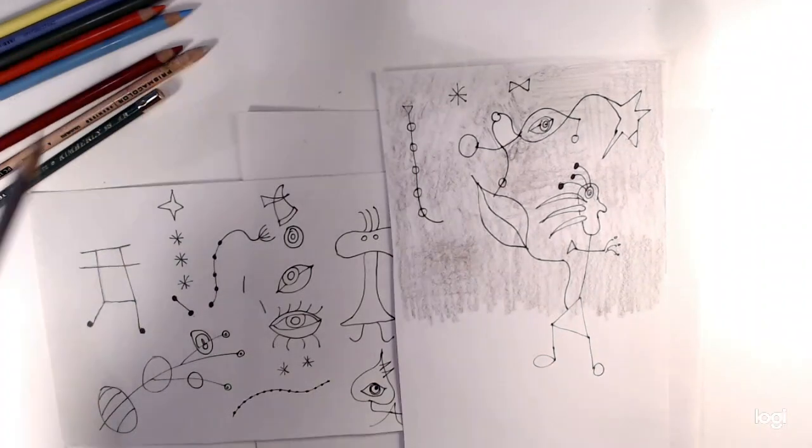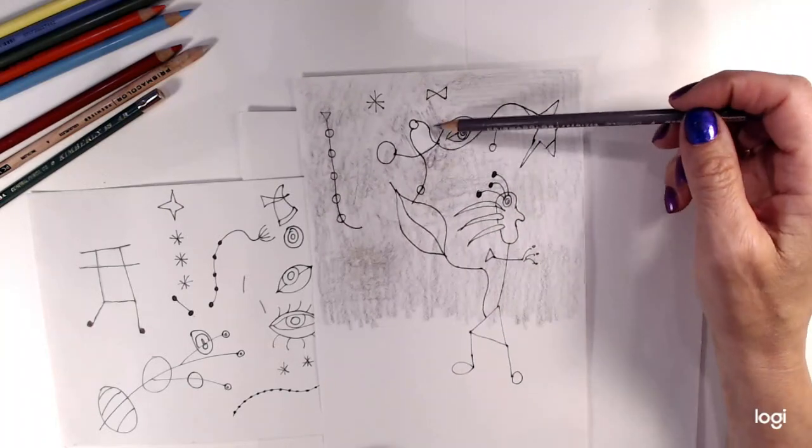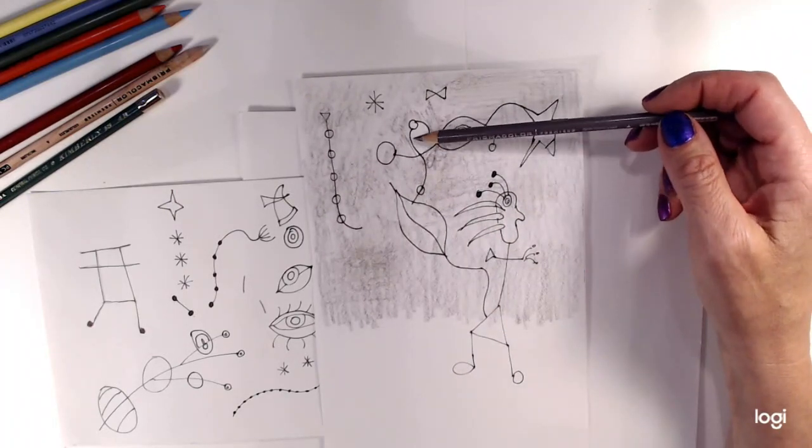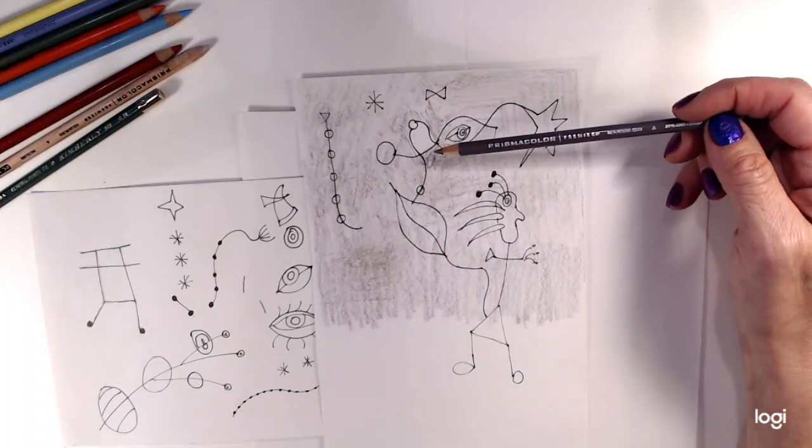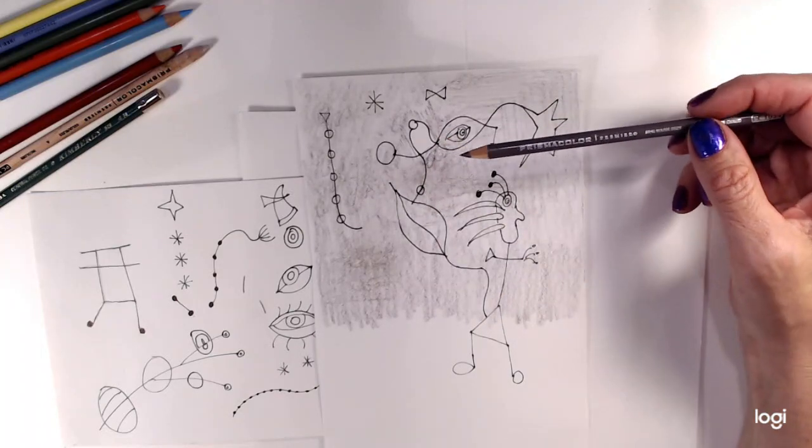And the advantage of that is that areas like this where it's white, I can keep it white by not coloring that in because I've already drawn the shapes in. I know where that white is going to be and I think it creates a nice visual impact on my paper.